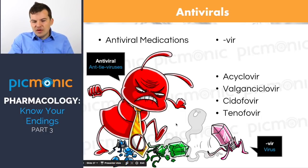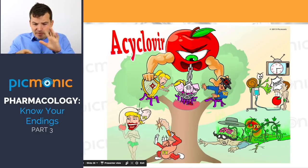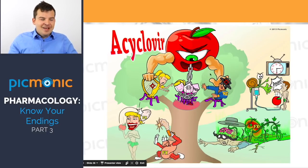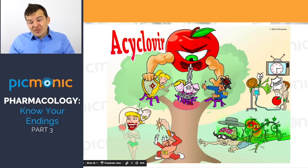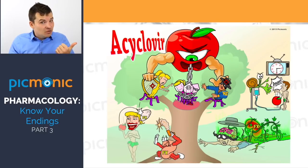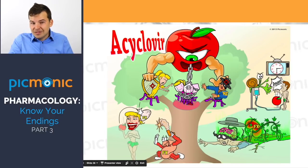Acyclovir, valacyclovir, cidofovir, tenofovir. Here's our acyclovir Picmonic — a cyclops apple with inhibiting chains on the virus. Acyclovir is taken for one of two main reasons: genital herpes, represented by the herpes harp character, or varicella zoster, our zoster virus character.